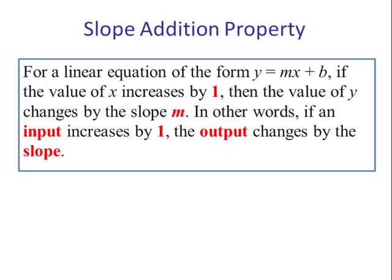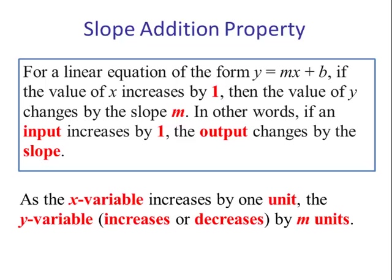So if we're asked to interpret slope, here's a template that we can use. We can say: as the x variable increases by 1 unit, the y variable increases or decreases, and that determines if it's a positive slope or a negative slope, by m units. And m is going to be a number.